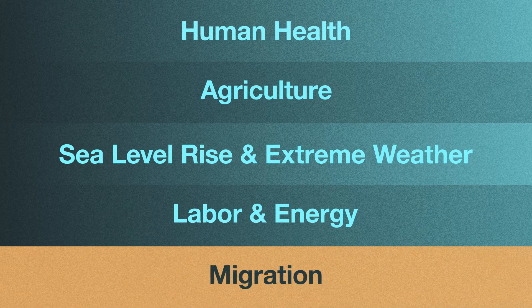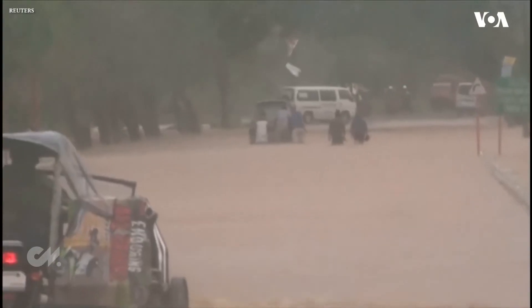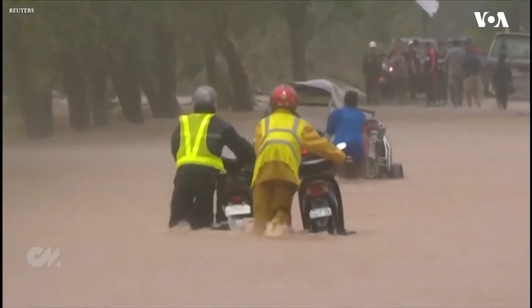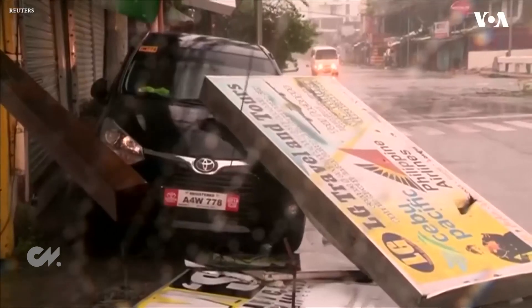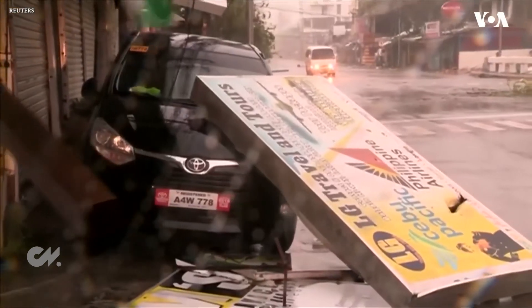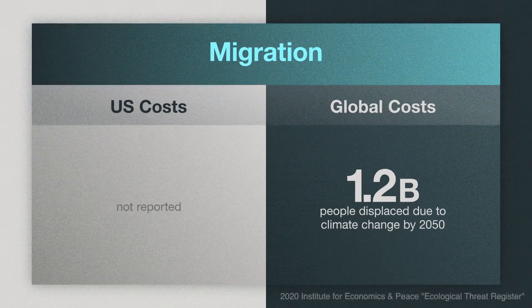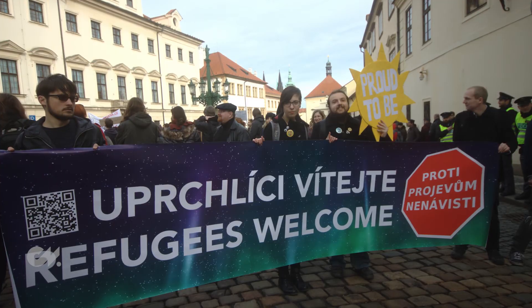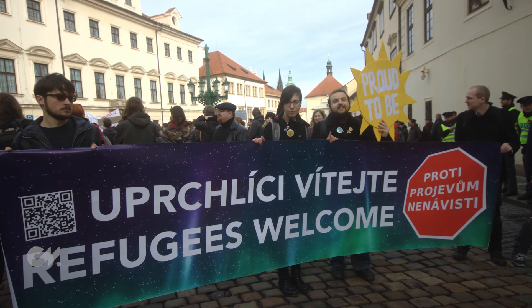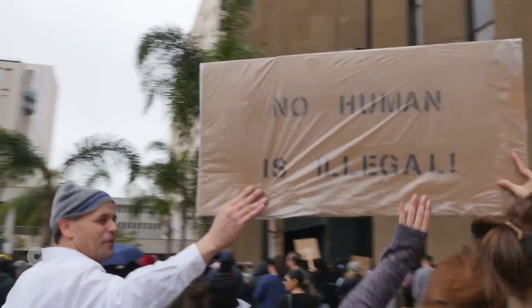Migration. Human migration is often referred to as a second-order cost of climate change and includes the cost from geopolitical conflict and the loss of livelihoods resulting from the mass movements of people fleeing climate-impacted areas. According to the Institute for Economics and Peace, an estimated 1.2 billion people are at risk of displacement by 2050. This displacement has the potential to cause conflict both domestically and internationally.